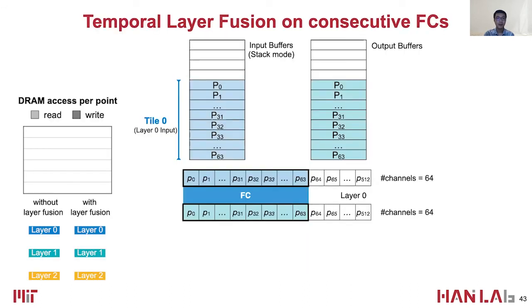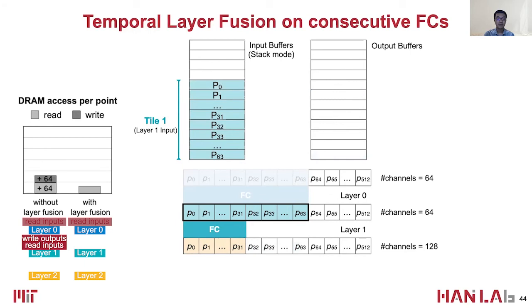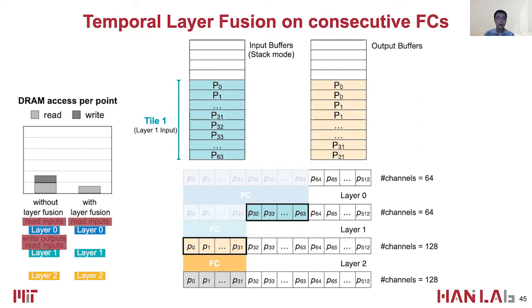Here is an example of Point Tech fusing three consecutive layers. The left shows the DRAM memory footprint per point. In stage 0, Point Tech loads layer 0 features of 64 points (point 0 to 0.63) from DRAM and obtains the corresponding layer 1 features. Since the computation in stage 0 uses all loaded data, layer 0 tile is released from input buffers. Switching to layer 1, the features of layer 1 are transferred from the output buffers to the input buffers, and the features of layer 2 are calculated. Since the output channels are doubled, each point now takes up two entries in the buffers.